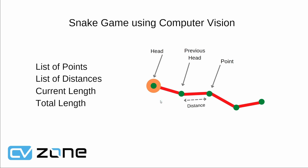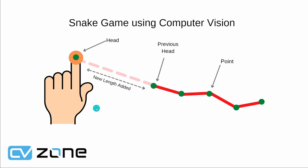We need the distance to know how long our snake is. Whenever it eats something we add to the length, and whenever it is moving we keep the length the same. We also have a variable called current length, which is the total of all the distances added up. The allowed length is the maximum threshold value for the snake. When we move our finger it creates a new point and we calculate the distance between that point and the previous one.